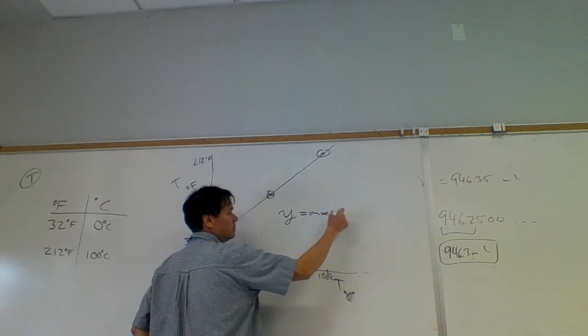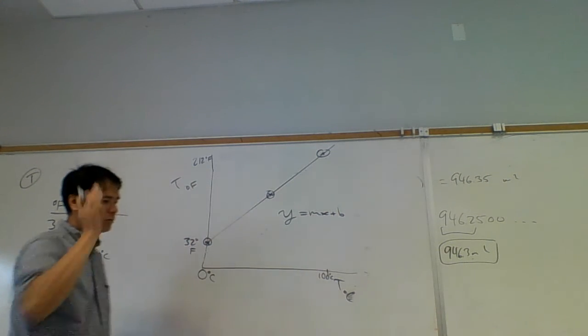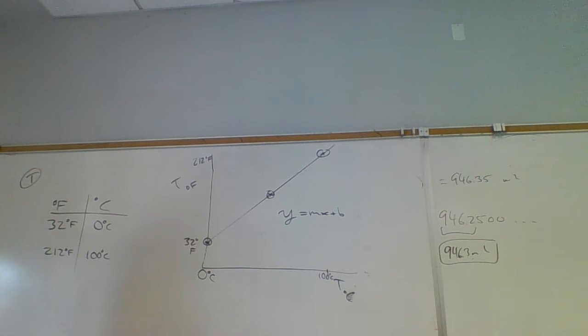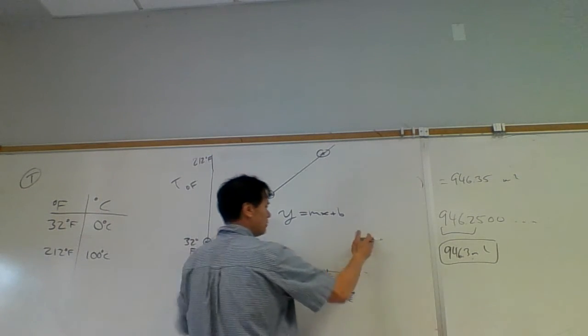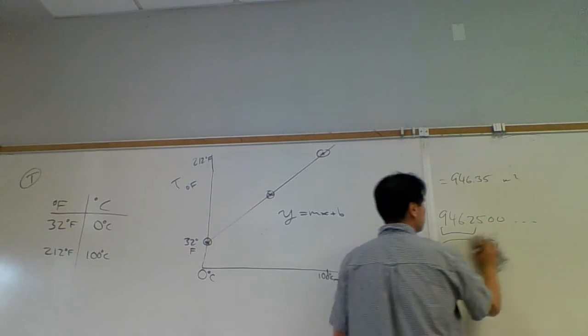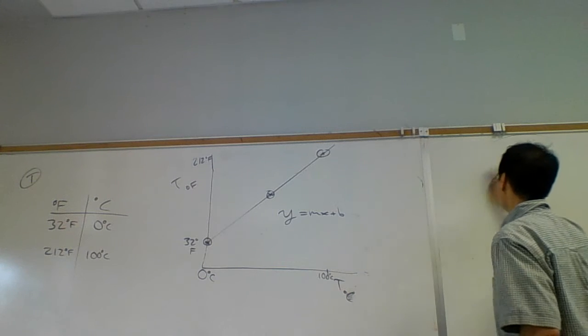Y equals mx plus b. So rather than drawing a curve like this, rather than having a table like this, what we're going to do is a process in science called data reduction. Data reduction is we're going to take all this data and reduce it into its most concise definition. The most precise definition is this equation. This equation we call what?